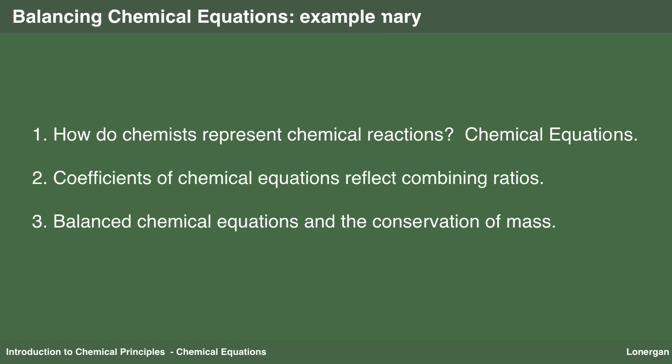Some things to remember: chemists use chemical equations to represent chemical reactions. They show the chemical formulas for the reactants on the left and the products on the right. The coefficients of the chemical equation indicate the ratios in which chemical reactants combine and products are formed. They refer to ratios of numbers, but not masses. Atoms aren't destroyed or created in chemical reactions. Hence, the number of atoms of each type of element on the reactant side must balance their numbers on the product side.